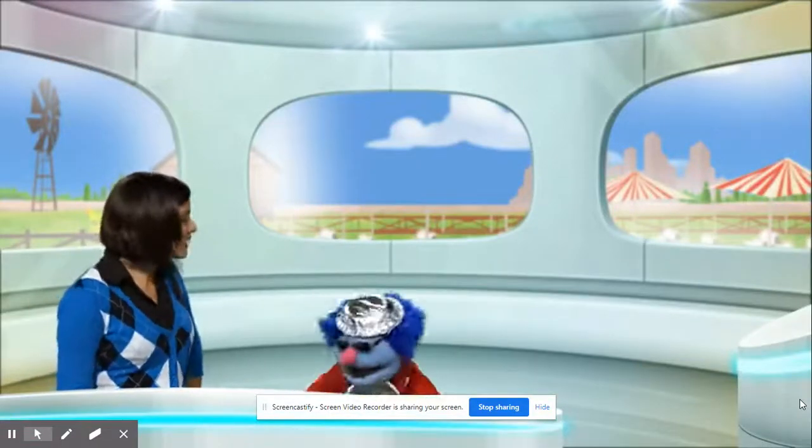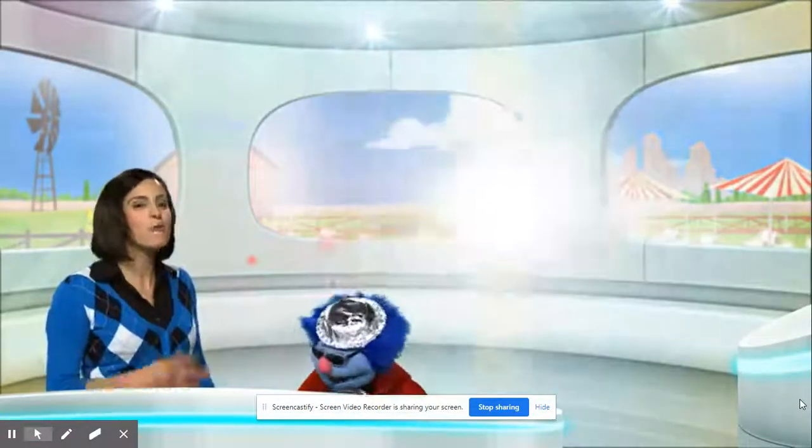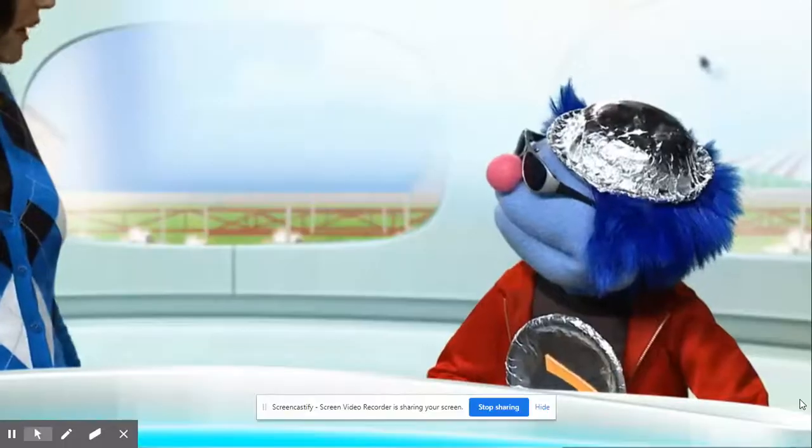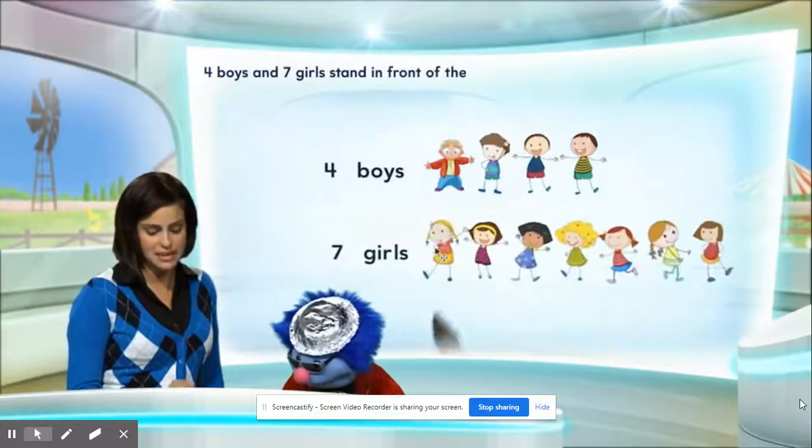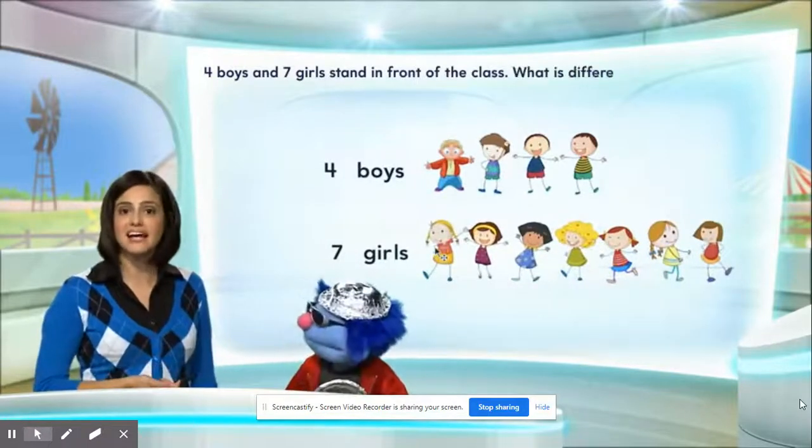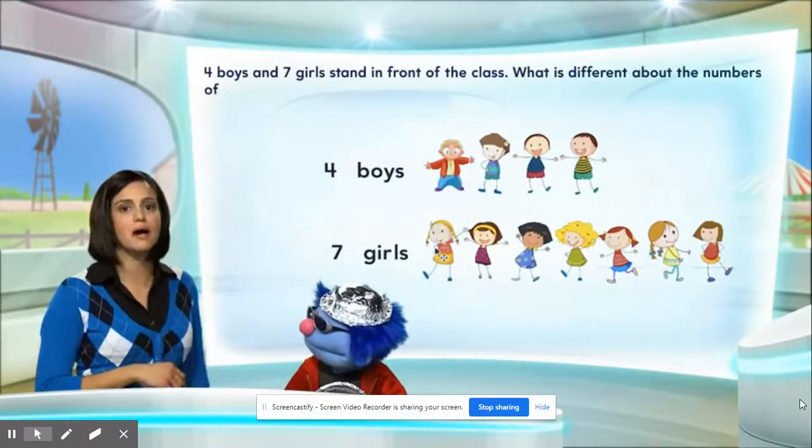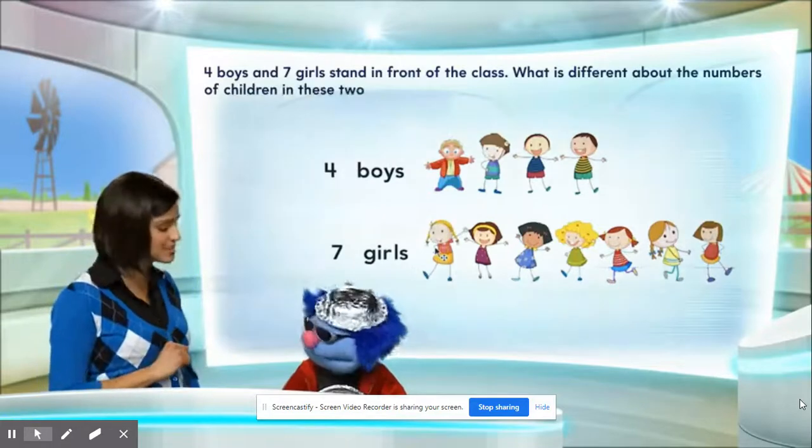All right, that's okay. Why don't we start our math puzzle anyway? Okay. Four boys and seven girls stand in front of the class. What is different about the numbers of children in these two sets?